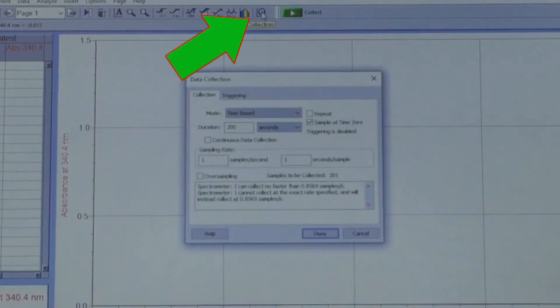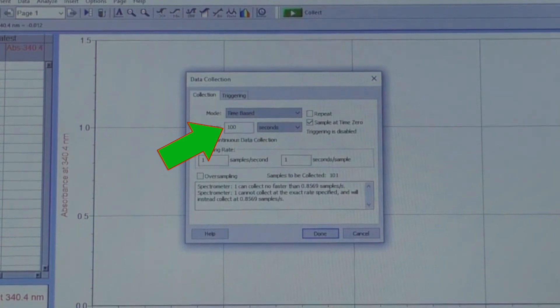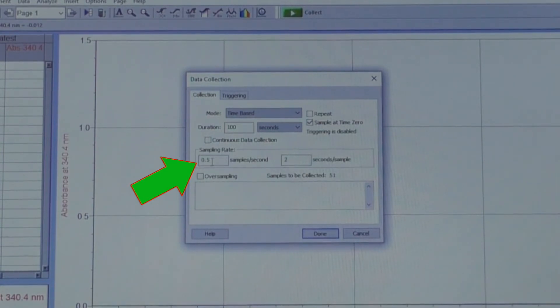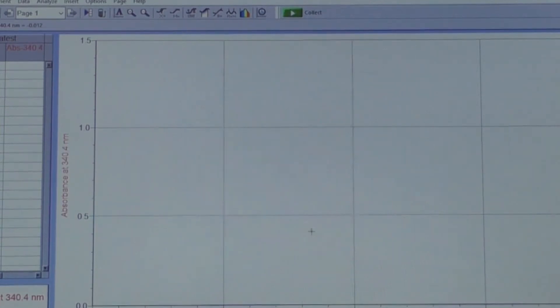Now click on the Clock and Graph icon. The Data Collection window will open. Check that the mode is time-based. Change the duration to 100 and make sure the units are in seconds. Change the sample rate to 0.5 samples per second and check that it states 2 seconds per sample. Make sure the sample at time 0 box is checked. Click Done to save your settings.